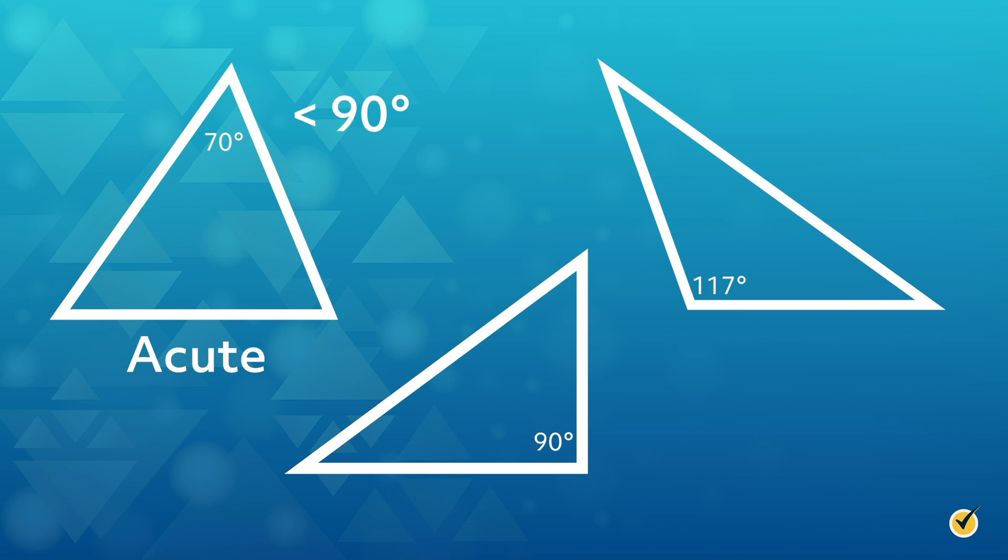Just remember that acute angles are less than 90 degrees. This one is easy to remember, since cute things are often small, like puppies and kittens.